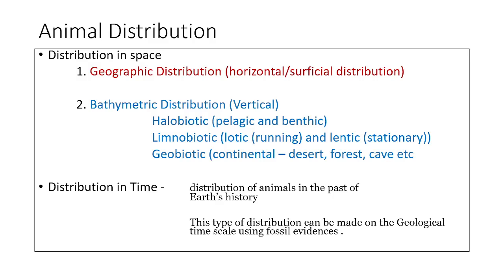The second type is bathymetric distribution, which is the vertical distribution, further divided into halobiotic, limnobiotic, and geobiotic. Halobiotic deals with the distribution of animals in seas and oceans — that is, in salt water. Within halobiotic, we have two categories: pelagic and benthic. Benthic deals with the distribution of animals at the bottom of the ocean, and pelagic deals with the distribution of animals in the open sea.